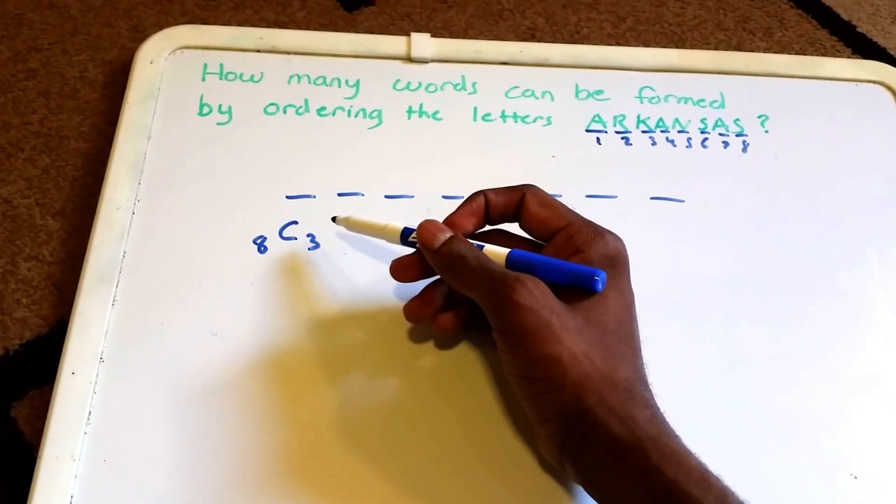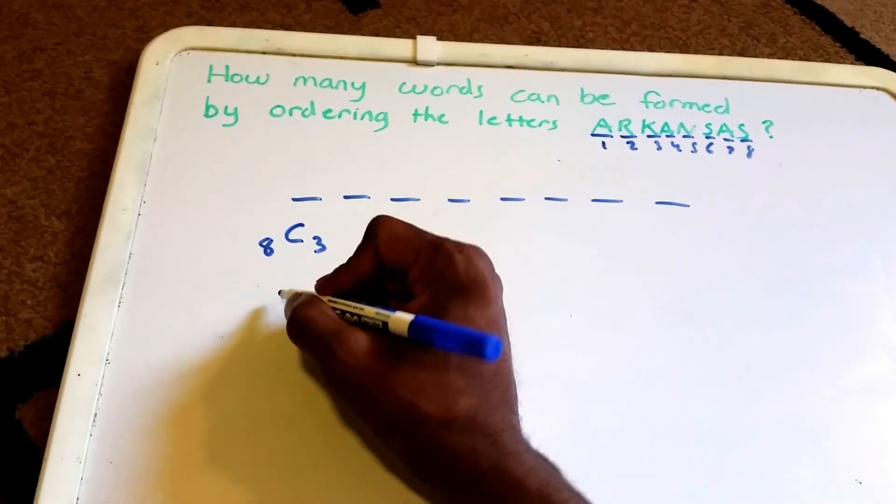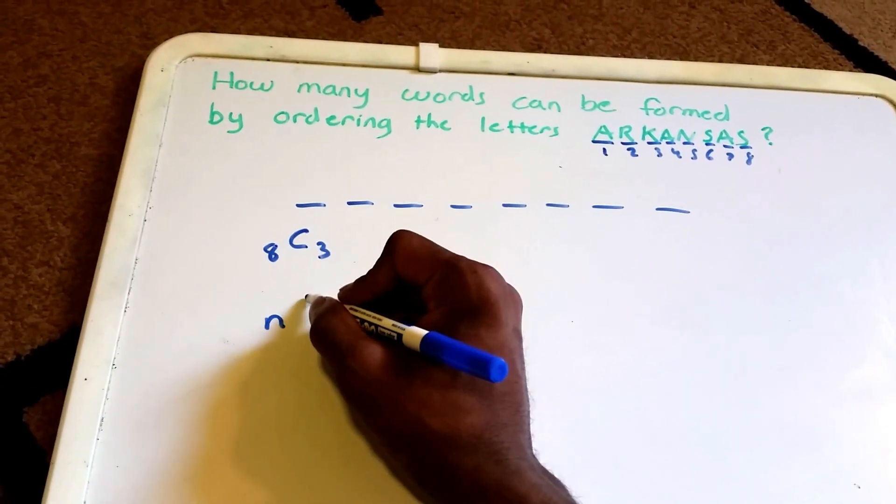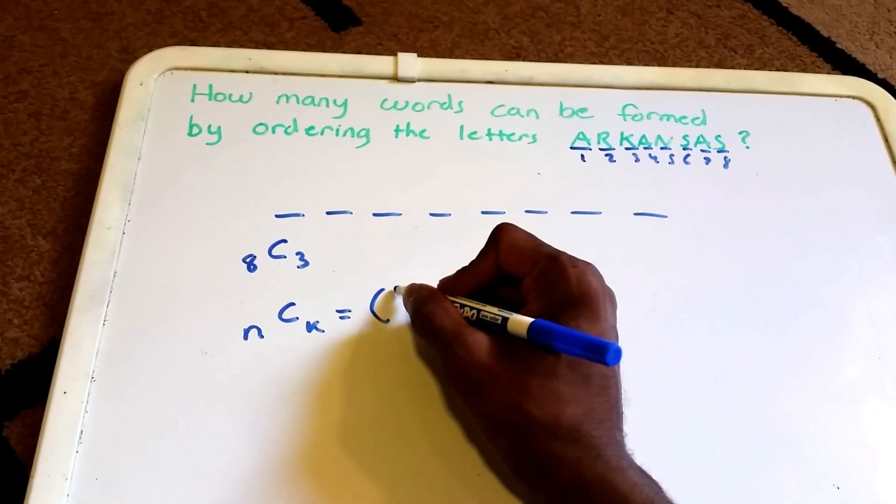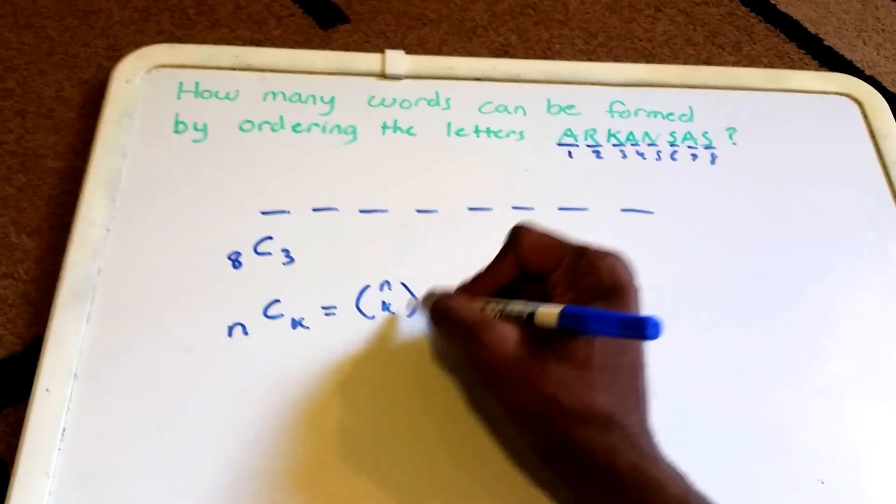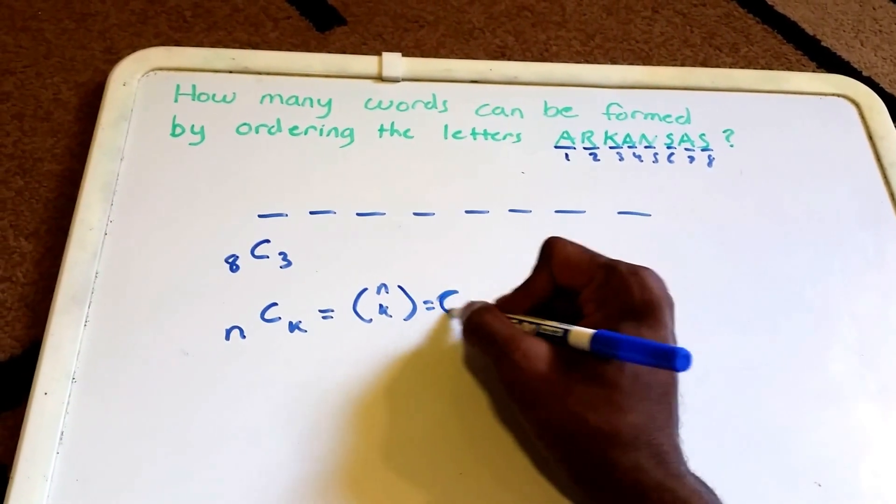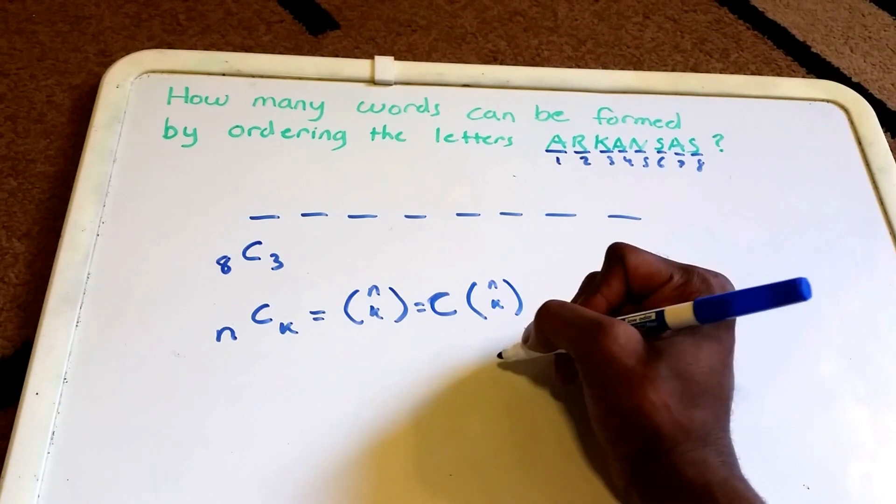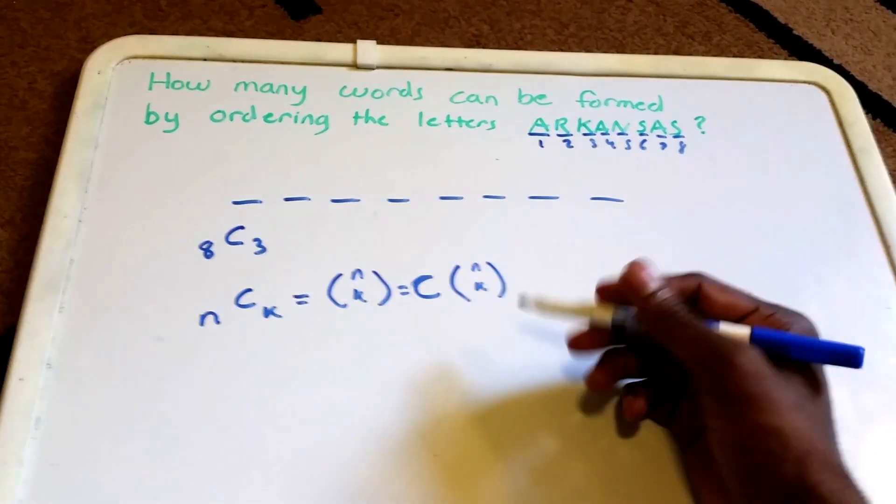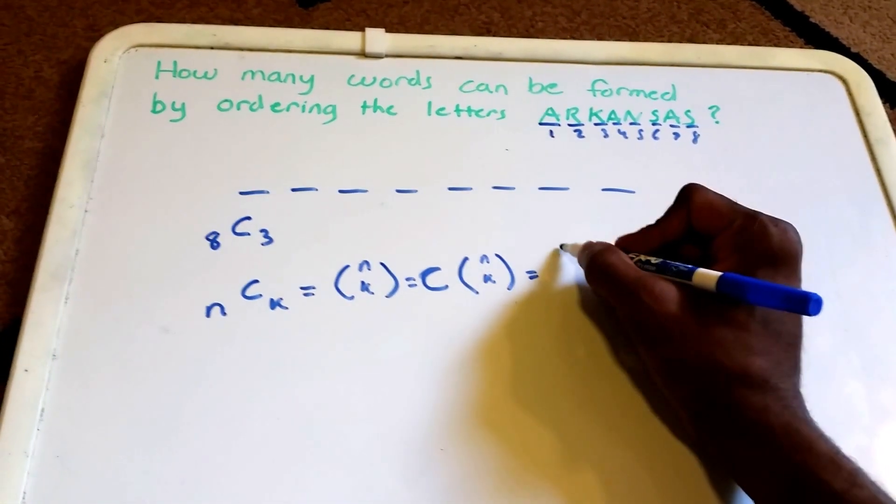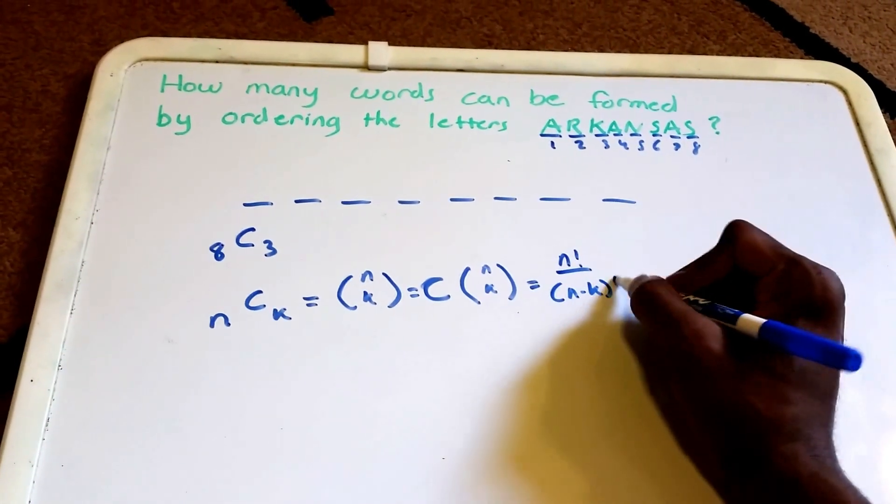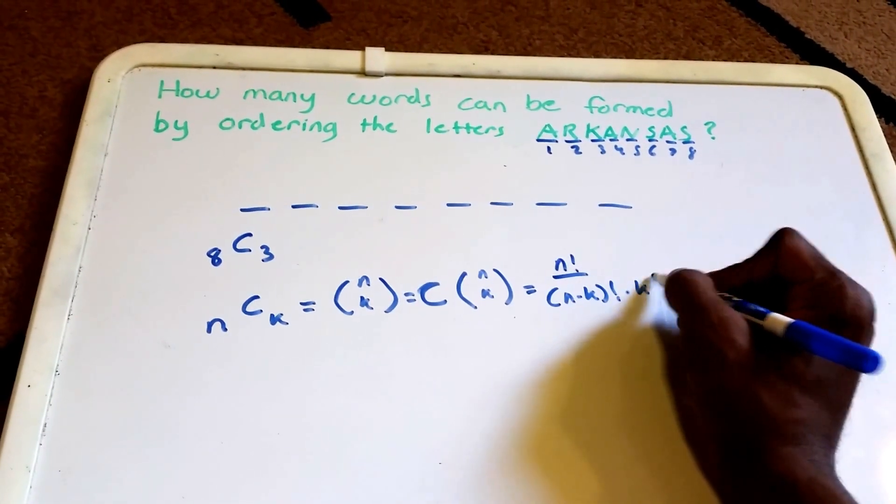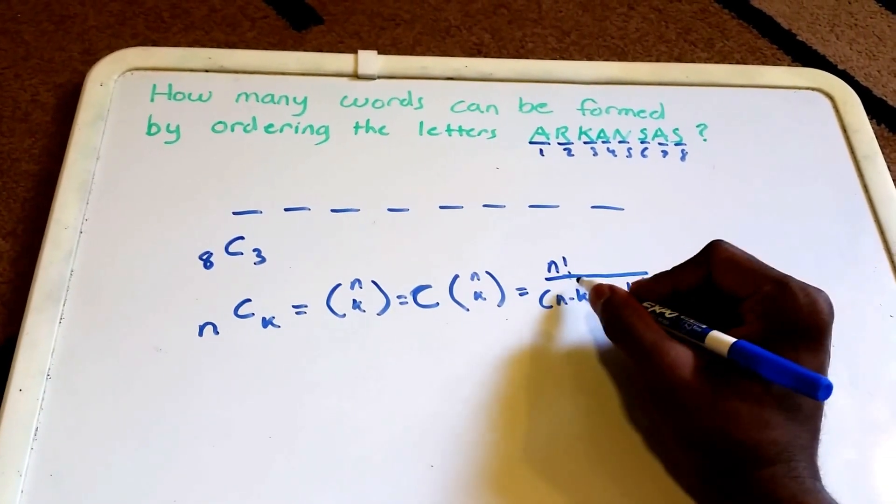For those of you that don't know, this is the combination formula. The combination formula, I'll write it right down here, is n C k, or written like that, or maybe you might see it as a parenthesis n, k, or C n k specifically. All this is equal to is n factorial over n minus k factorial times k factorial.